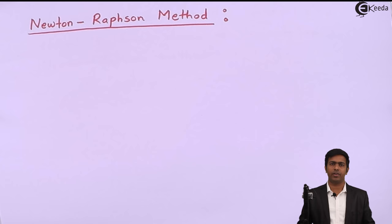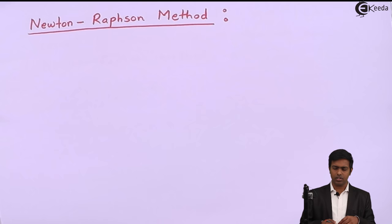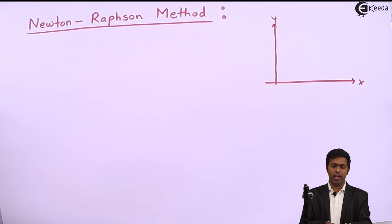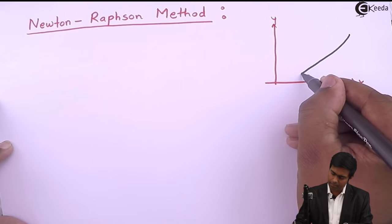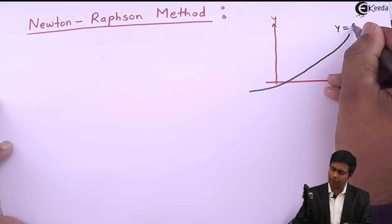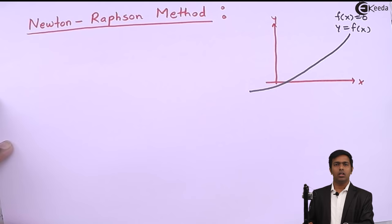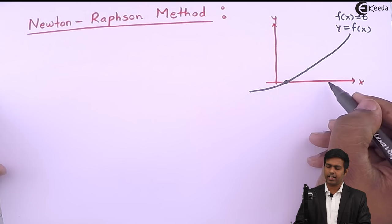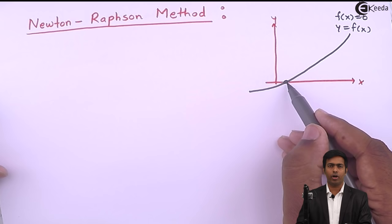What is the geometric meaning of Newton-Raphson method? Let's understand it first. Consider the x and y axis with a curve. The equation of this curve is y = f(x), or we say f(x) = 0. The root of the equation is the point of intersection of this curve with the x-axis — wherever this curve cuts the x-axis, that point is called the root of that equation.